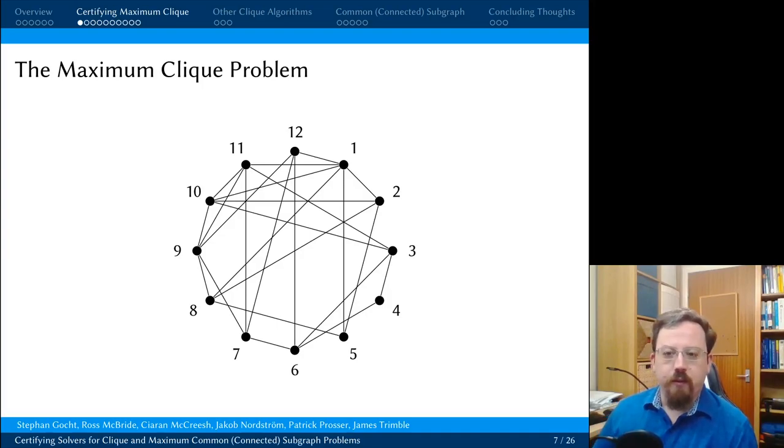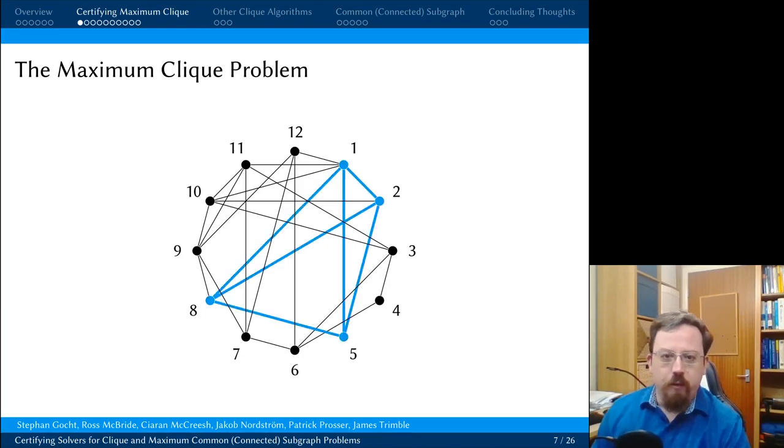And now for some more details. So in the maximum clique problem, we're given a graph. We have to find a subset of vertices where every vertex in the subset is adjacent to every other vertex in the subset. And we want this subset to be as large as possible. So I can show you a full clique in this graph.